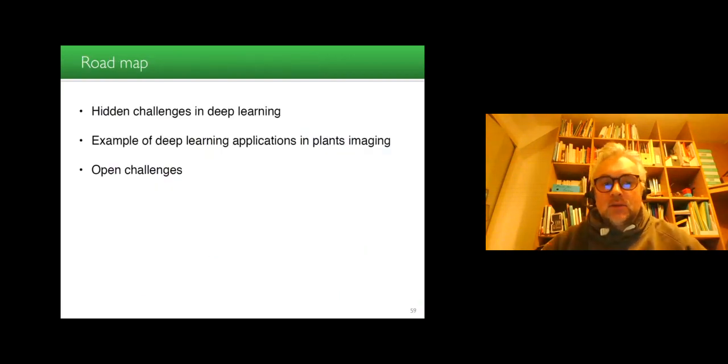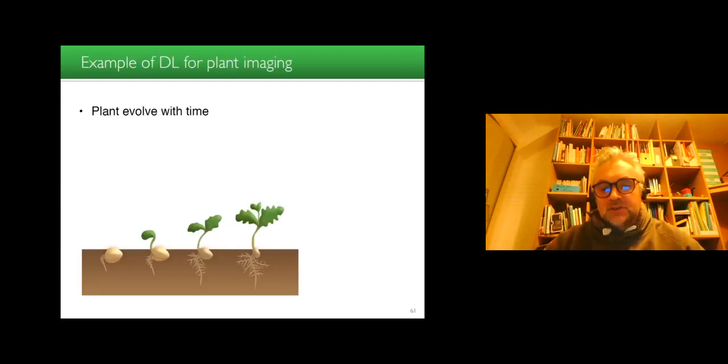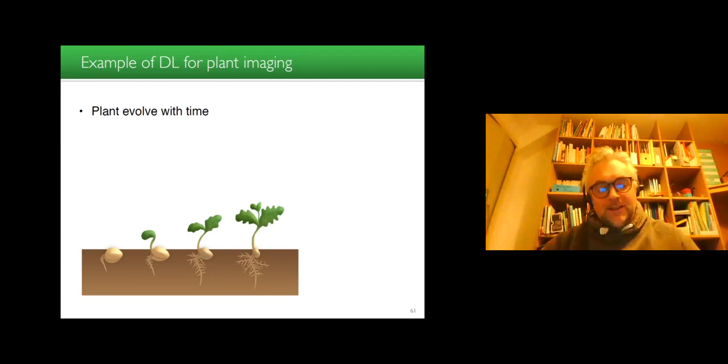So now we have addressed the hidden challenges in deep learning, and I would like to provide some examples of deep learning applications in plant imaging that we have produced in my group recently. So one specificity of plants, which is not met in all domains of life science imaging, is that plants constantly evolve with time. It will not be possible for human beings. Of course, human beings evolve with time, but not up to the point where you have a new arm that will go out of your body at no point. While in plants, this is a kind of very abrupt and very important change that will happen over time, and this constantly through all the time life of the plants.